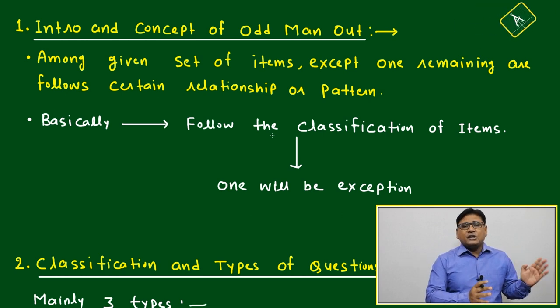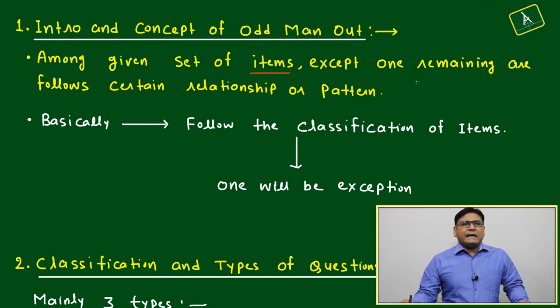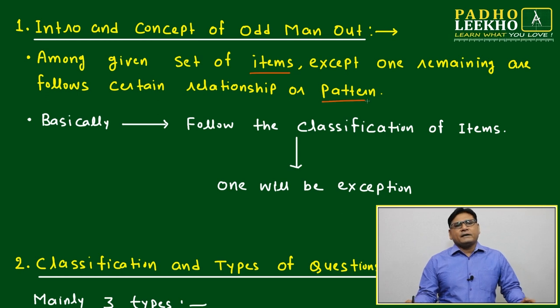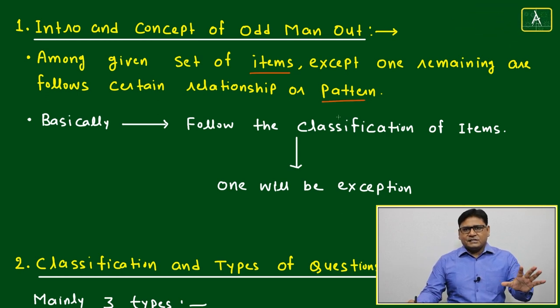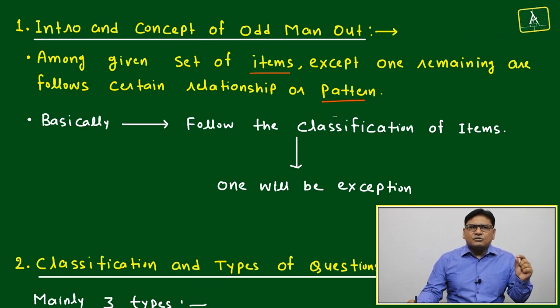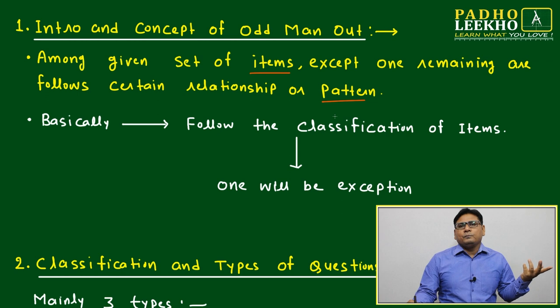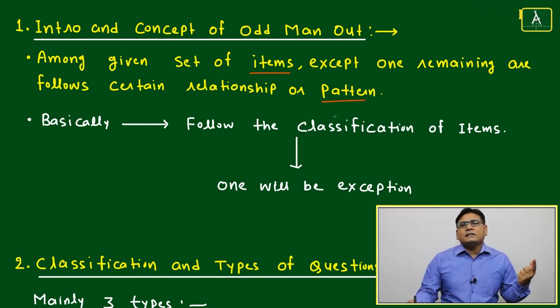This topic's questions may be asked based on this concept: among a given set of items, except one, the remaining follow a certain relationship or pattern. Like if five choices are given, four will follow a certain pattern, certain relation or certain mathematical condition, but one will not follow. If one is not following, that will become the odd man out.